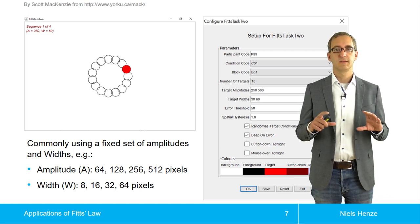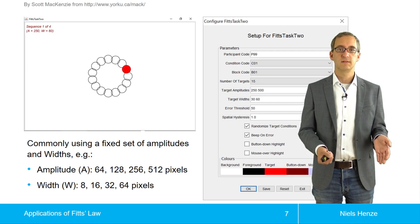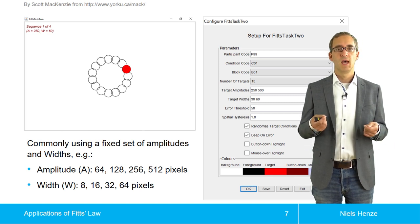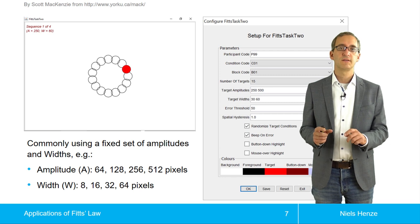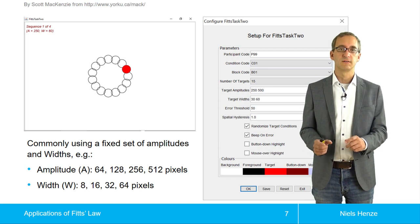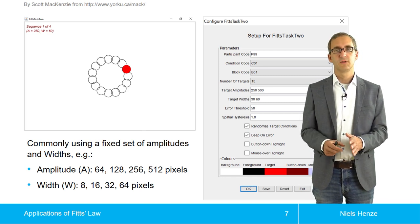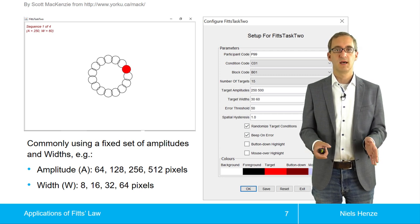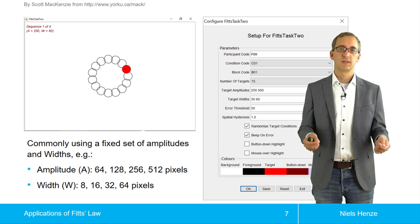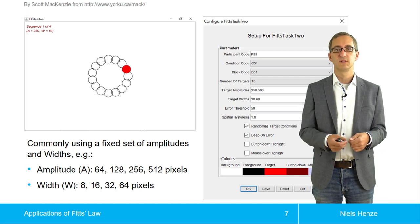We have a large circle that defines the distance between the targets, and smaller circles which are the actual targets. We use circles because it is easiest to determine their size — it doesn't matter where the pointer is.